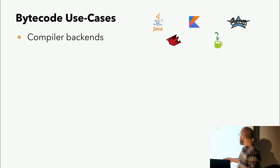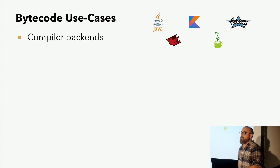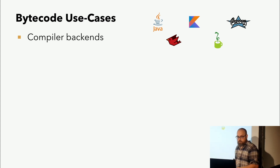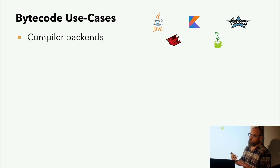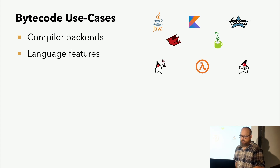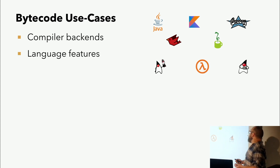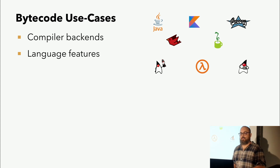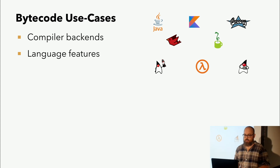Wofür wird Bytecode eingesetzt? Als Compiler-Backend: jede Sprache, die Bytecode erzeugen kann, kann auf der JVM laufen. Wir haben die Klassiker wie Java, Groovy, Kotlin, aber auch eher nicht so Java-nahe Sprachen wie JRuby oder Jython, die eben dank Compilen zu Bytecode auf der JVM laufen können. Wir haben Sprachfeatures – Reflection, Lambdas, Annotation Processing – kann auch alles auf Bytecode-Ebene passieren. Oder auch viele der dynamischen Dinge von Groovy zum Beispiel werden auch über Bytecode realisiert.